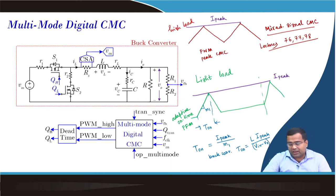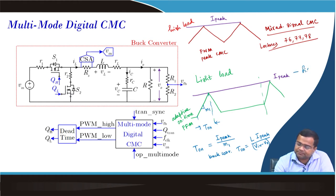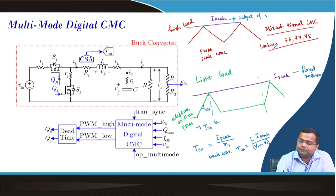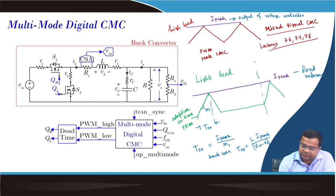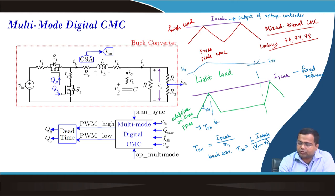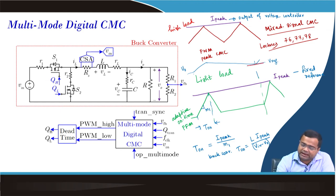Here the beautiful thing is that if the input voltage and output voltage are the same and the peak current is fixed — this is a fixed reference — and this is the output of the voltage controller. If everything is fixed, how does this trigger? During this time, if there is an output voltage, it will go up and it will go down. So this is the output voltage — whenever the output voltage crosses V_ref, it will again turn on this on-time.